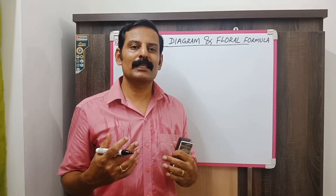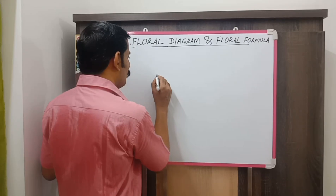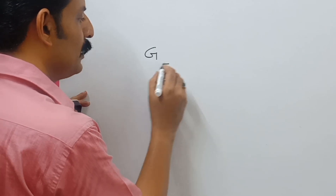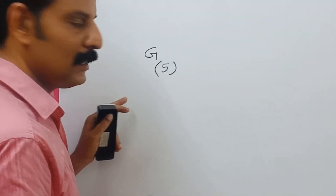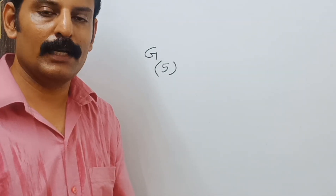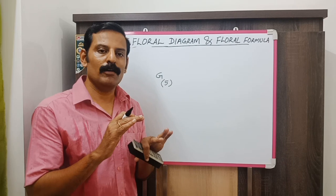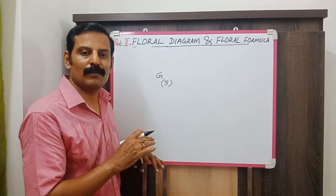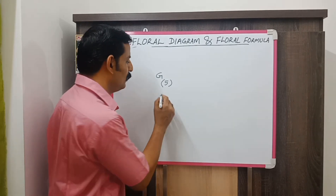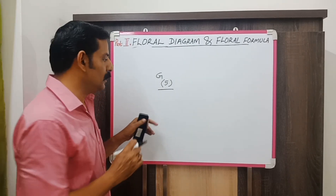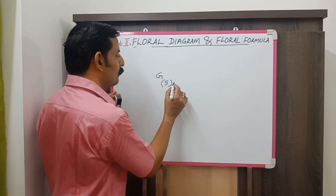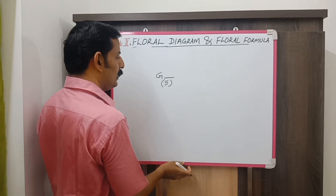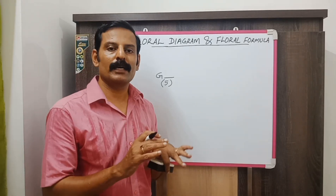So how do you represent the position of the ovary in a floral formula? We use the letter G for gynoecium. If there are five gynoecia and they are united, you represent it like this. The position of the ovary cannot be represented in a floral diagram — it can only be represented in the floral formula. If this is a hypogynous flower, you draw a straight line just below the number. If it is a perigynous flower, you give a straight line like this. If it is an epigynous flower, you draw a line above the number. This way you can represent the position of the ovary.